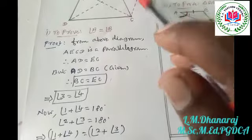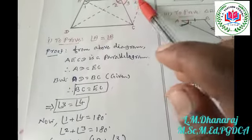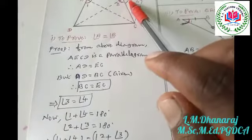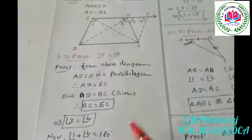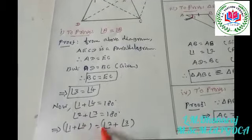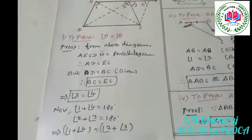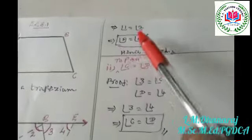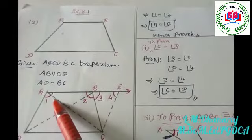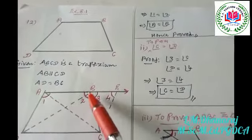Now, angle one plus angle four together form a linear pair, so they equal 180 degrees. Similarly, angle two plus angle three equals 180 degrees. Since angle three equals angle four, this gives us angle one plus angle four equal to angle two plus angle three.